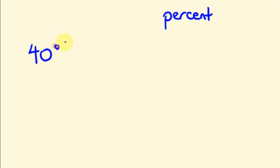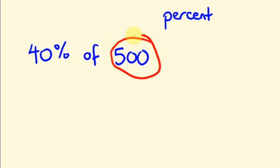Now I am going to take one question: forty percent of five hundred. So, forty percent of five hundred is forty divided by hundred, into five hundred. For five hundred, we have to calculate this percentage, that is divided by hundred.